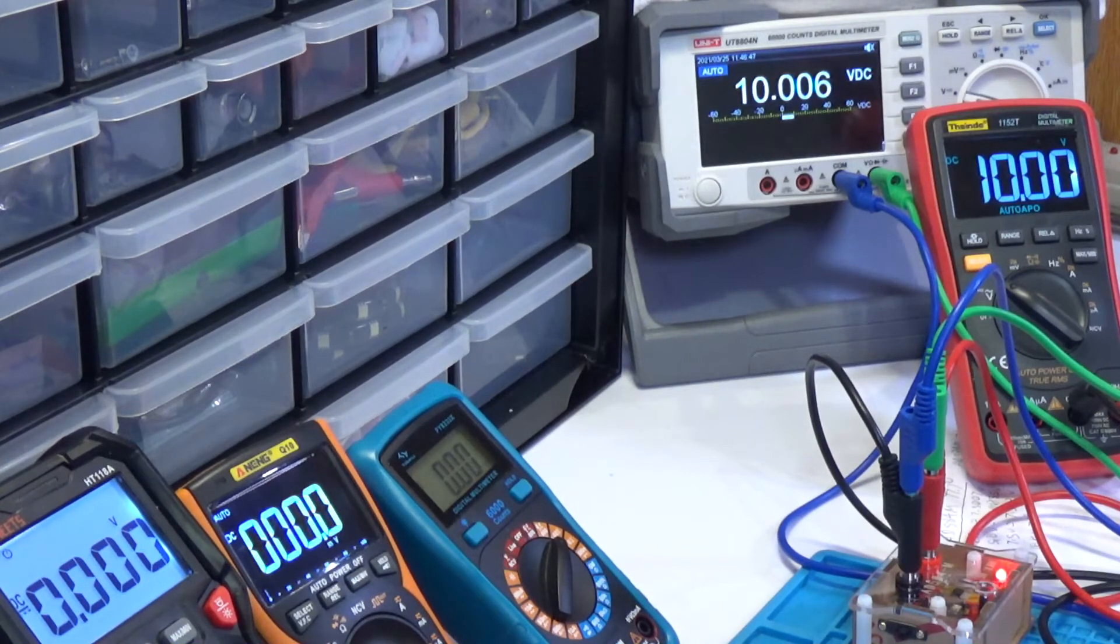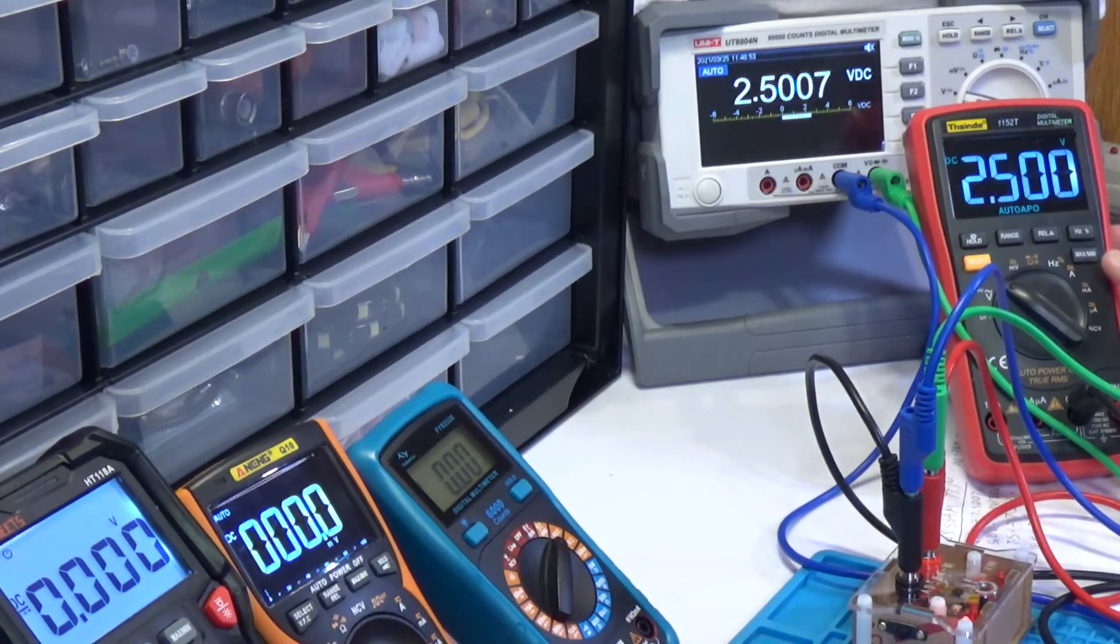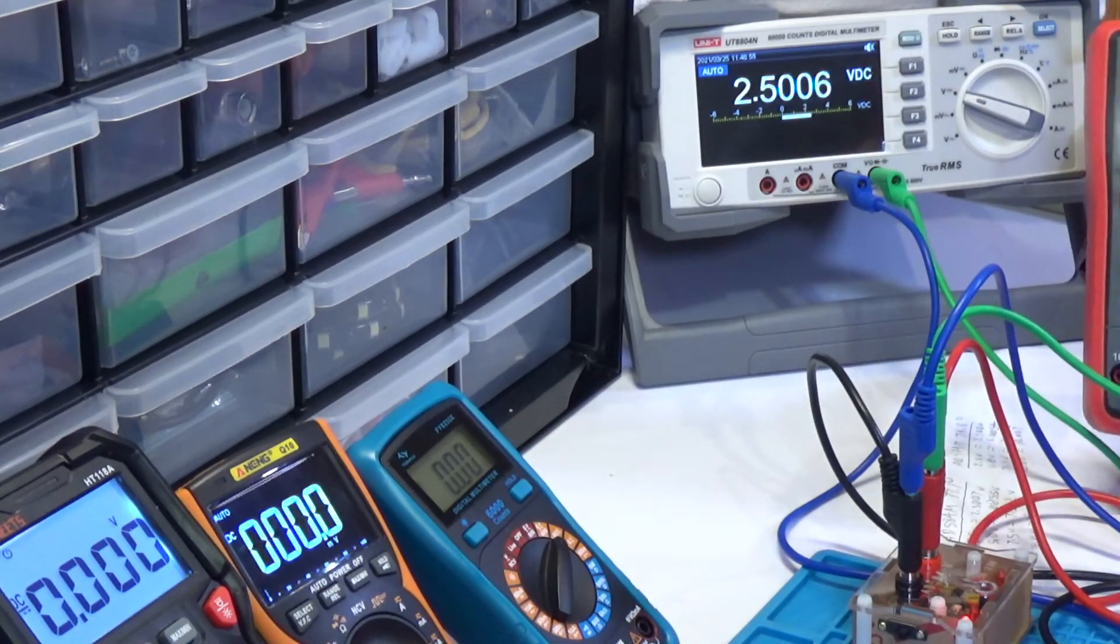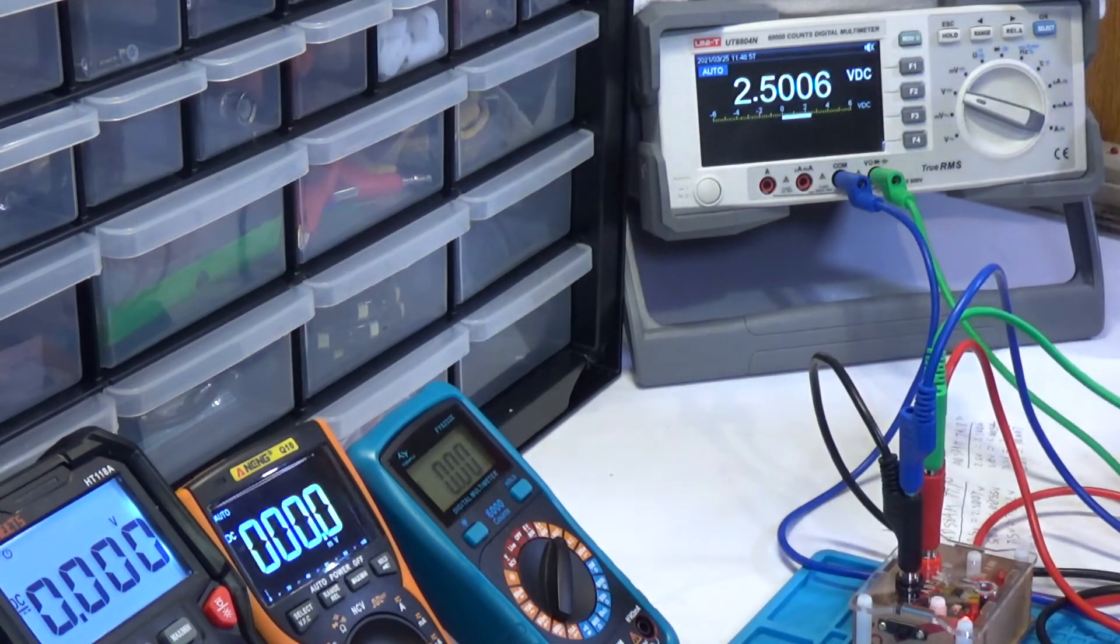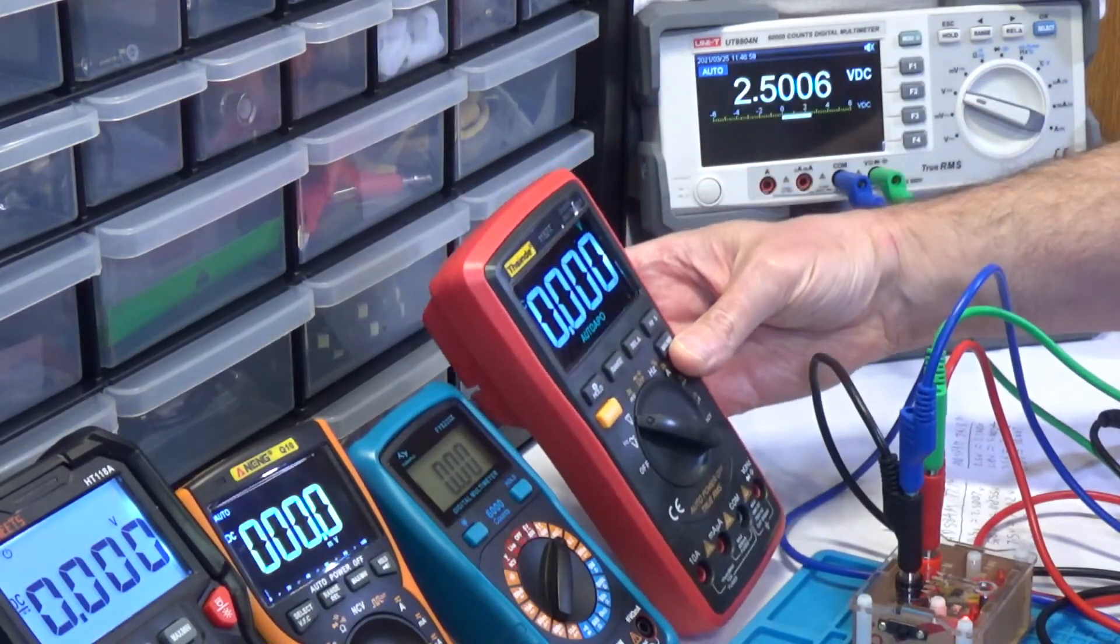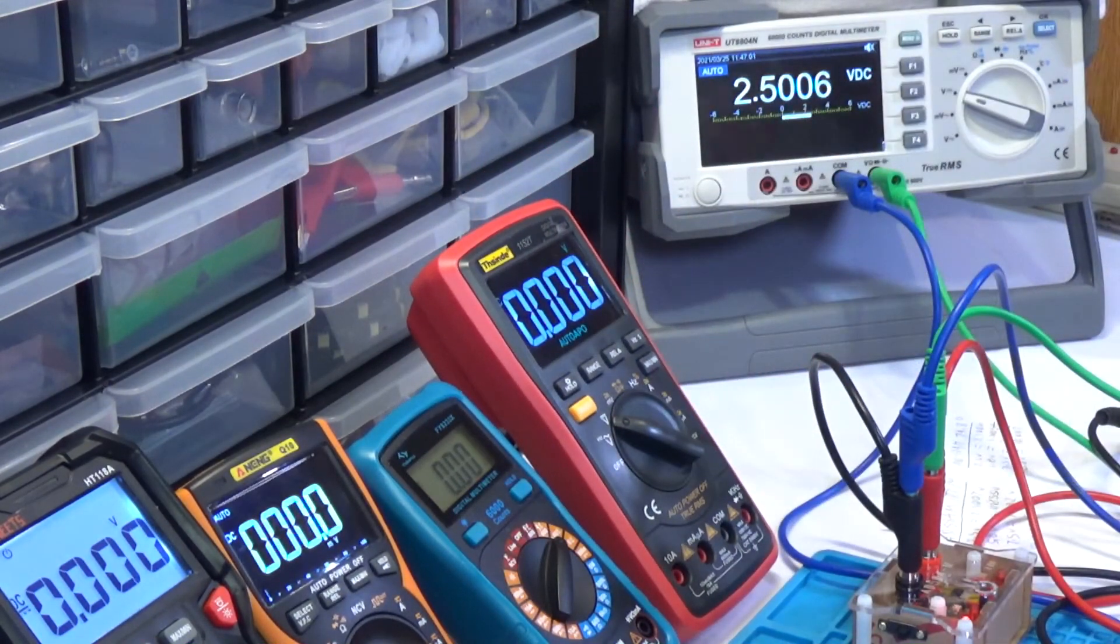Well, I would say probably the best two out of these five handhelds would probably be between the Coites HT118A and the Vicinity 1152T, but all of these did very well on this. Even the clamp meter did well. So there you go. That's going to do it for this review.